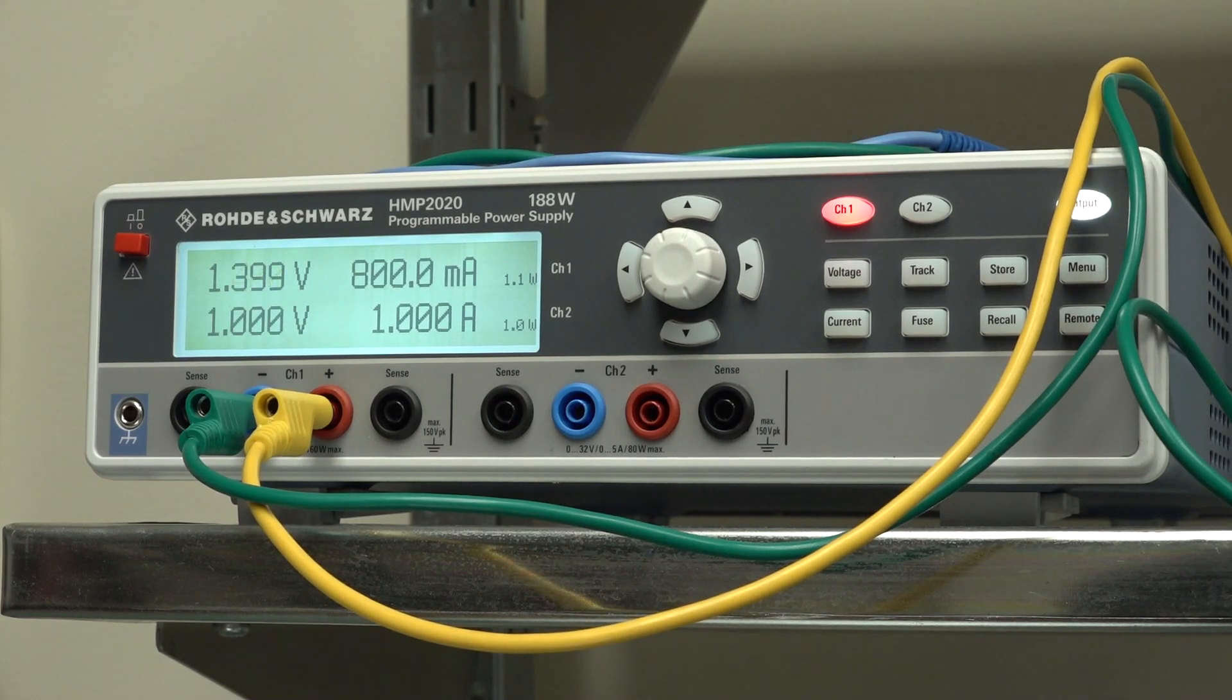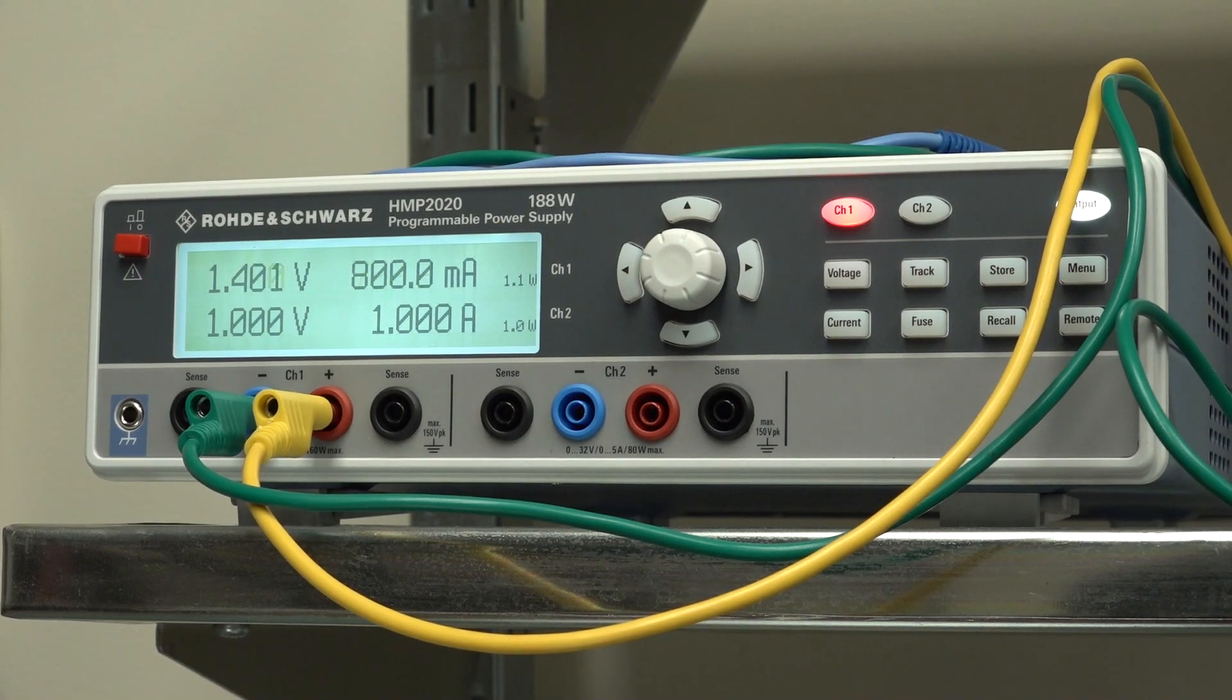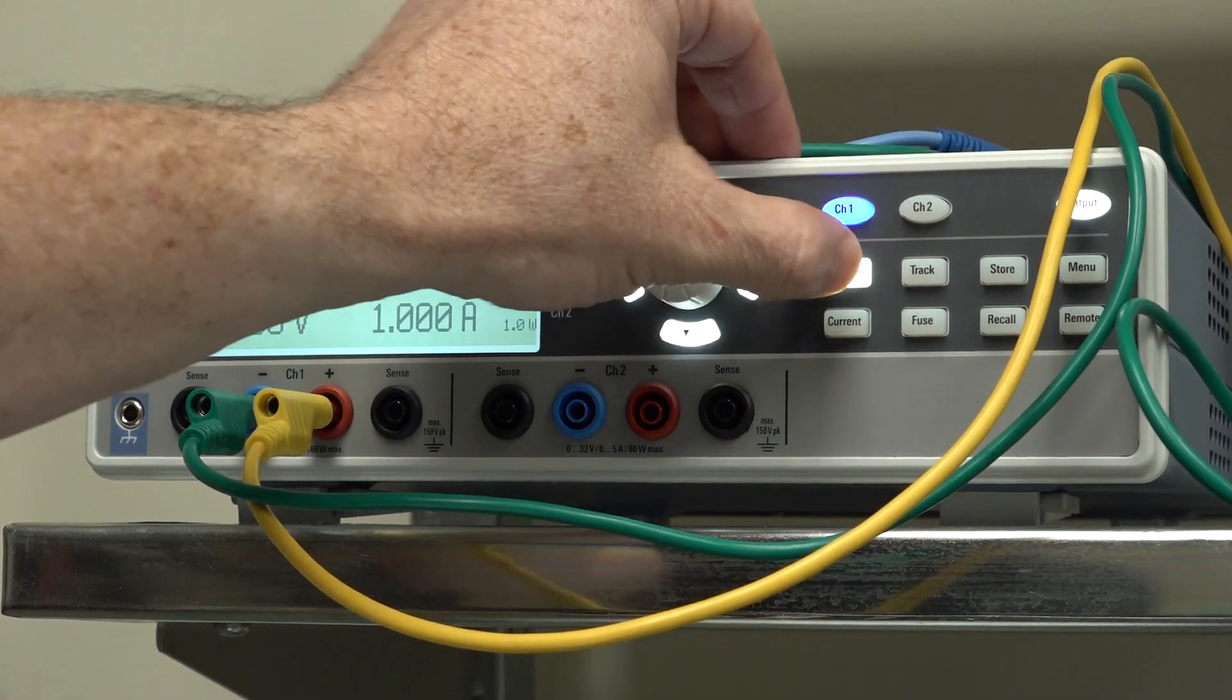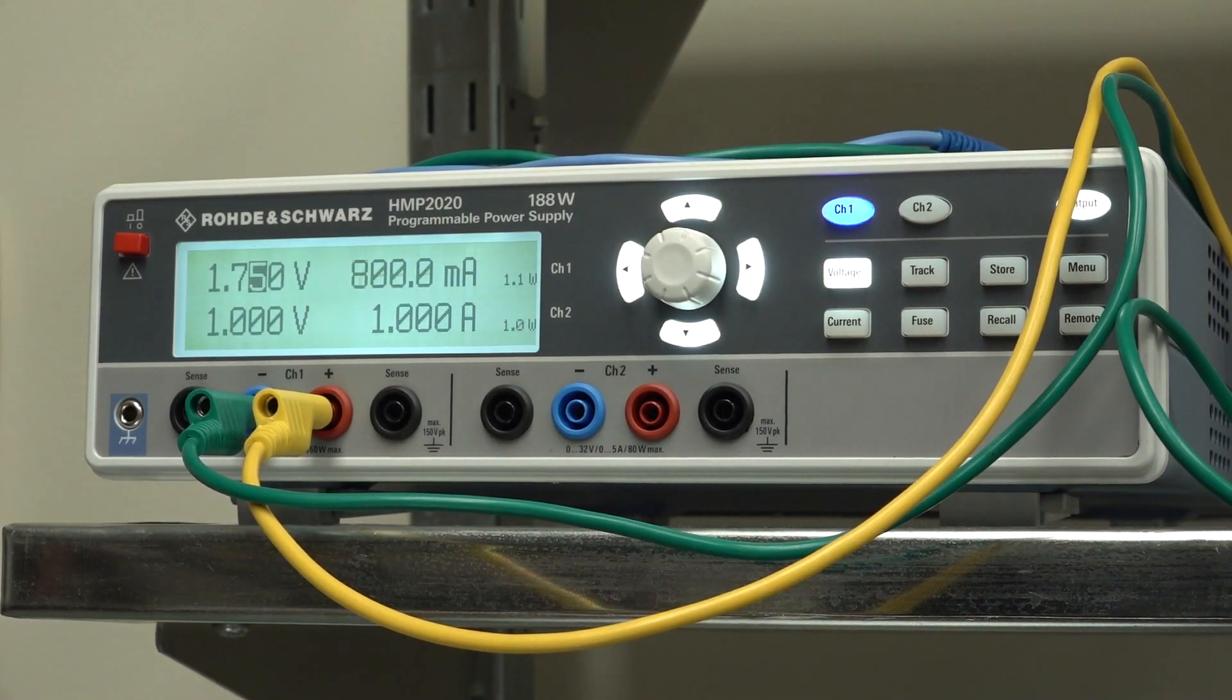So I'm just going to charge that up with a constant current of 800 milliamps. I'll leave it there and I'll monitor the voltage, of course. I've actually got it set to 1.75 volts, but you don't necessarily have to do that.